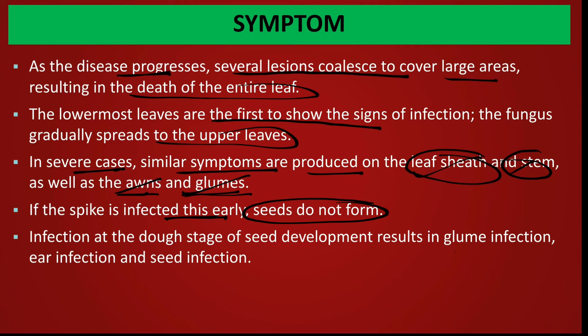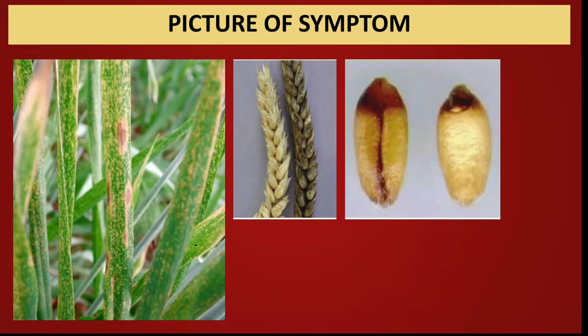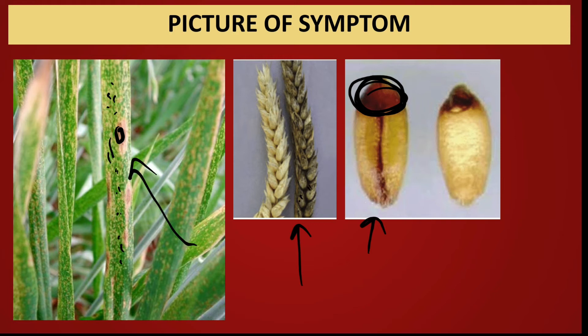अगर infection late में आता है और seed बन चुका है, उस case में glumes, ears और seeds में infection होता है। Brown color के spots बनते हैं जिनका size अलग-अलग होता है। Seed के कुछ portion infected होते हैं और ears में भी infection होता है — पूरे ear पर fungus की growth हो जाती है।